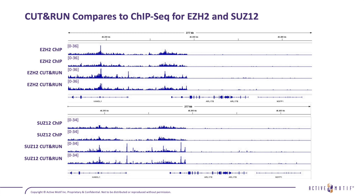CUT&RUN also compares well with ChIP-seq for non-histone marks. Looking at the histone methyltransferase EZH2 and SUZ12, both CUT&RUN and ChIP-seq show very similar patterns of distribution across the genome.